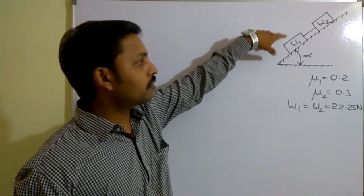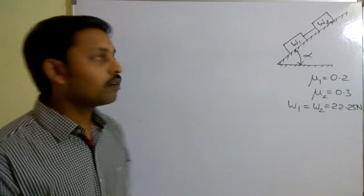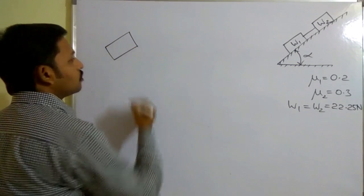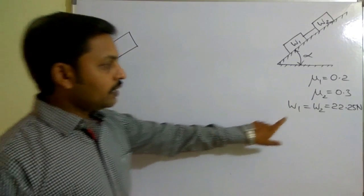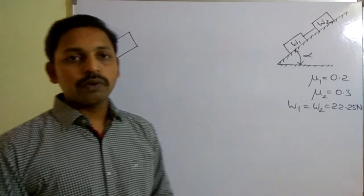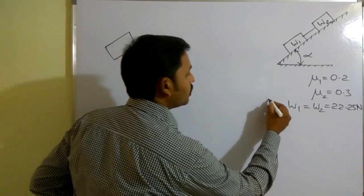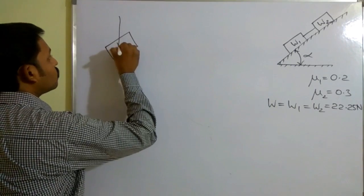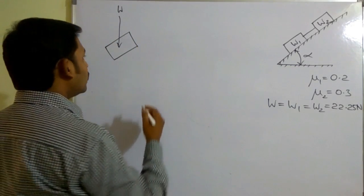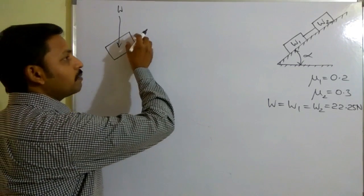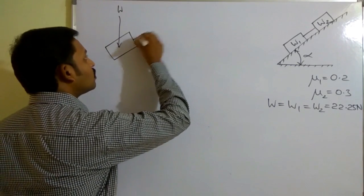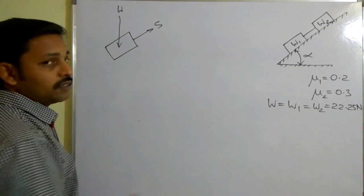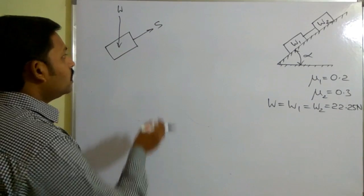For that reason, I am going to draw the free body diagram of block W1 first. So this is block W1. Given that W1 equals W2 equals 22.25 Newtons, I am considering them with a common letter W. The weight of the block acts vertically downwards. This block is connected by means of a string to the next block, so along the string there will be a tensile force, which I am denoting with the letter S.